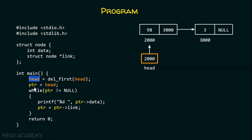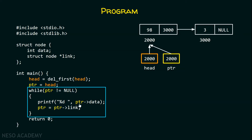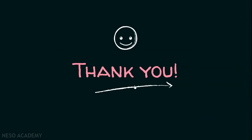After this, I am assuming that PTR is already declared in the main function. I can assign head to PTR, which means PTR is also pointing to this node. After that, I will use a while loop to print all the elements of this list — that is, 98 and 3. Okay friends, this is it for now. Thank you for watching this presentation.